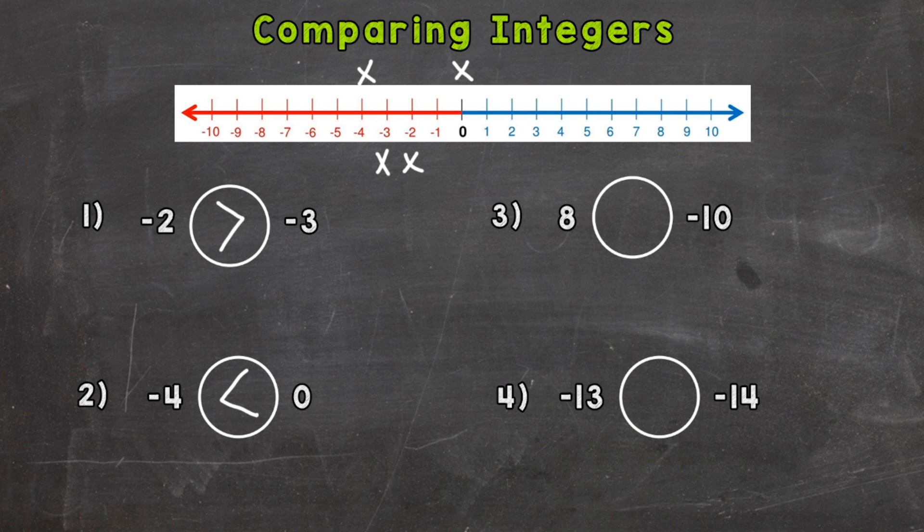Number 3. A positive 8 and a negative 10. Which one's further to the right on a number line? Or think temperature. Which is warmer? A positive 8 is greater than negative 10.